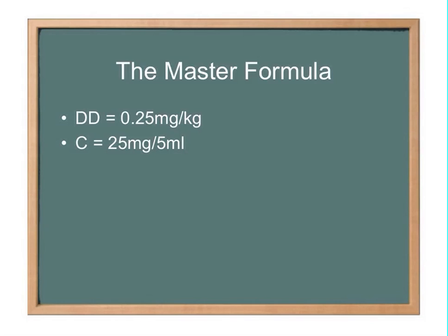Okay, so with that desired dose, we know which components of the master formula we're going to need. We're for sure going to need the desired dose component. You always need that. We're going to need the concentration. And since this is 0.25 milligrams per kilogram, we're going to need the patient's weight.